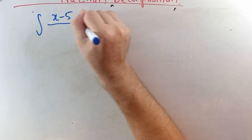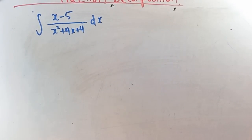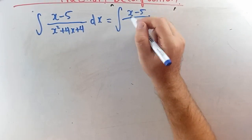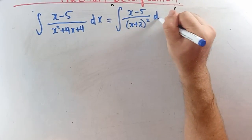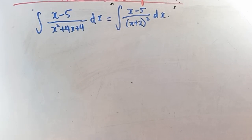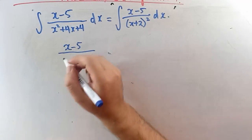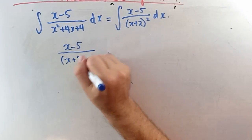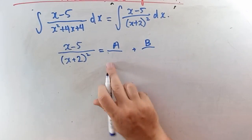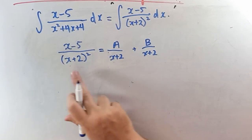The next example is the integral of x minus 5 over x squared plus 4x plus 4 dx. Factoring the denominator gives x plus 2 all squared — the factors are repeated. This changes things for the partial fraction decomposition.